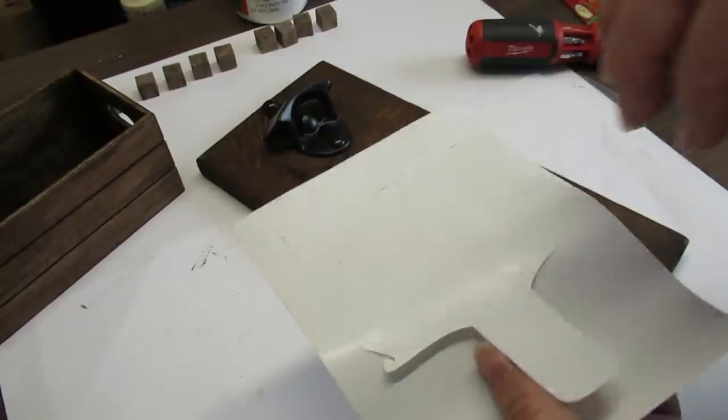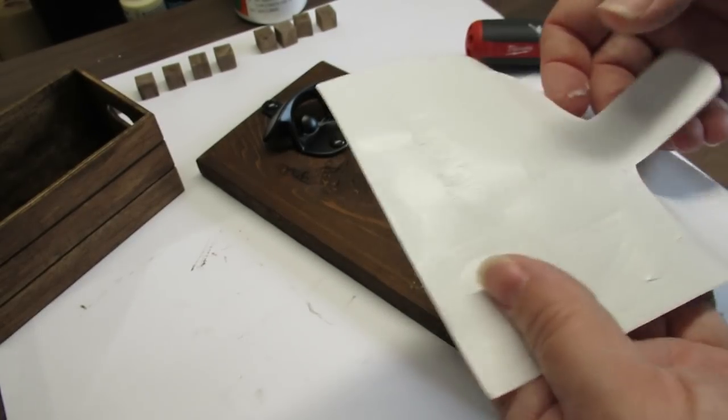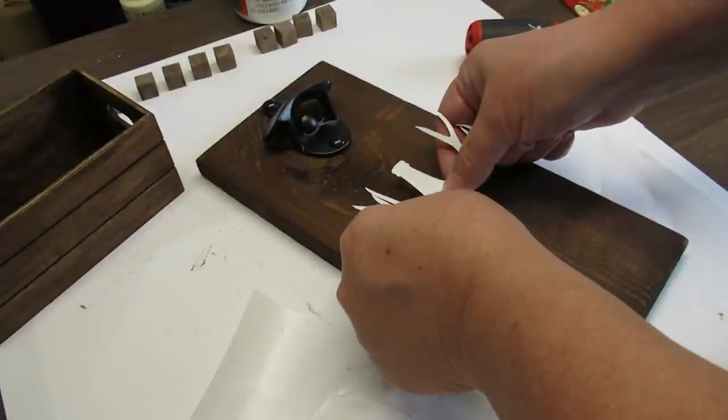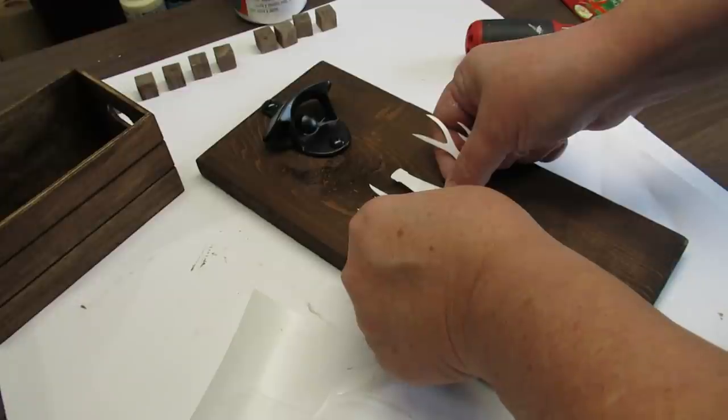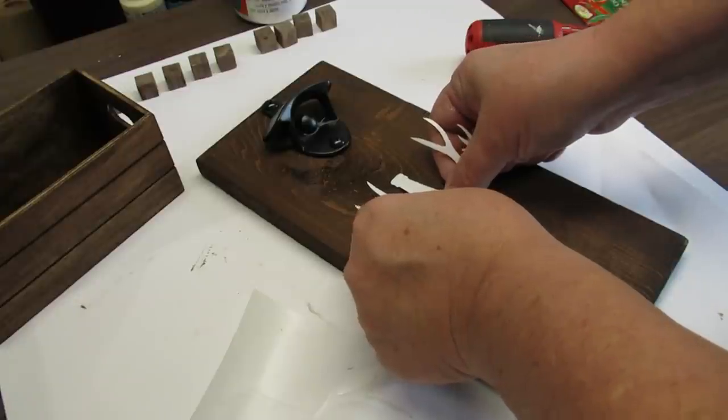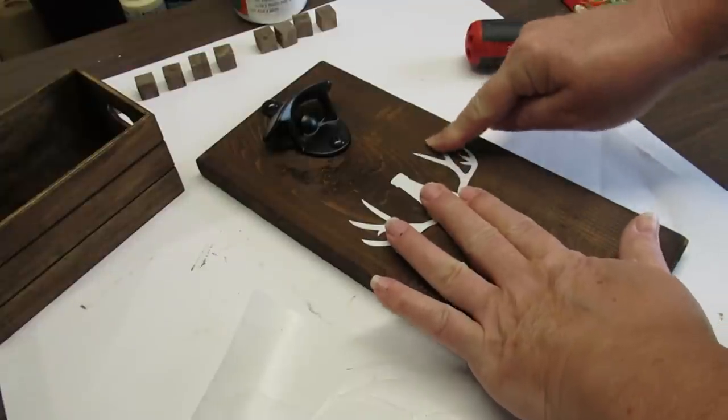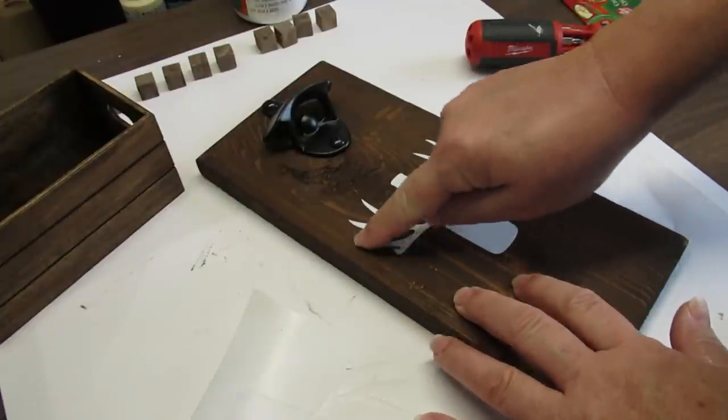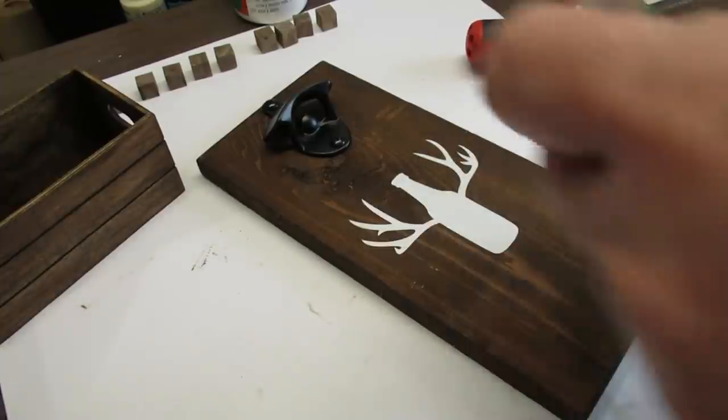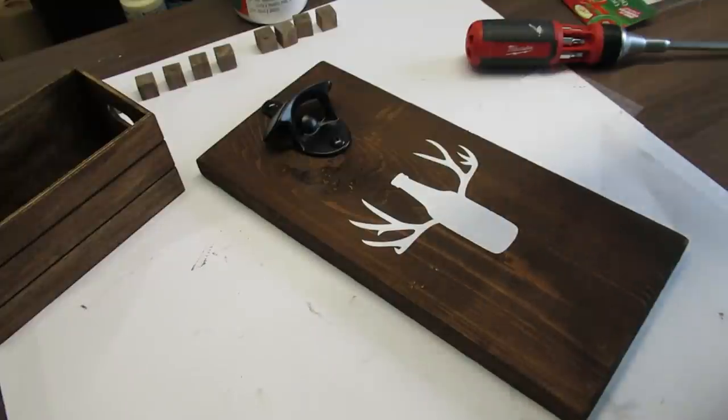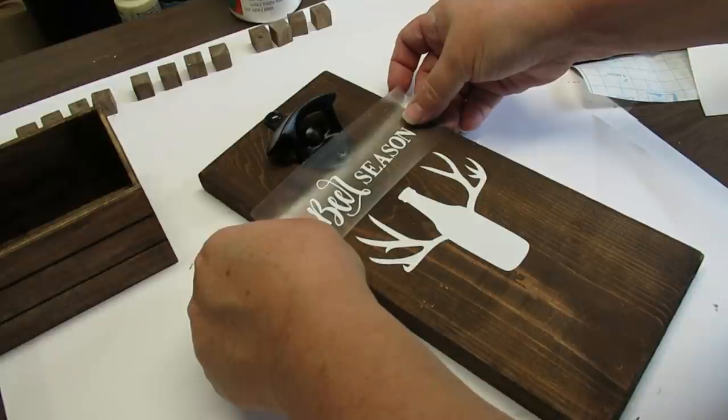I went to my Cricut Joy and I designed a decal for this. The first thing I'm going to be putting on is a beer bottle in the shape of antlers. It's really cute, something that I saw on Pinterest and I decided to try and recreate it. Now I am using white vinyl, but this is Walmart shelf liner vinyl. I did not buy the Cricut vinyl because it's just a little bit too expensive.